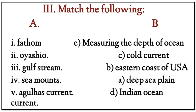Match the following — Column A to Column B. Fathom matches with measuring the depth of the ocean. The Agulhas Current matches with the Indian Ocean. The Gulf Stream matches with the eastern coast of the USA. Sea mounts are found in deep sea plains.